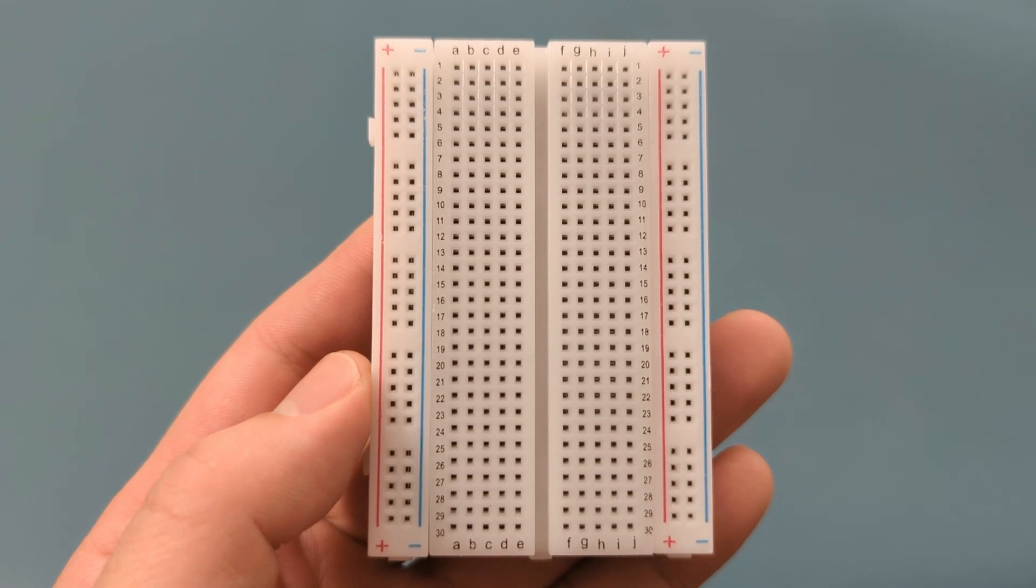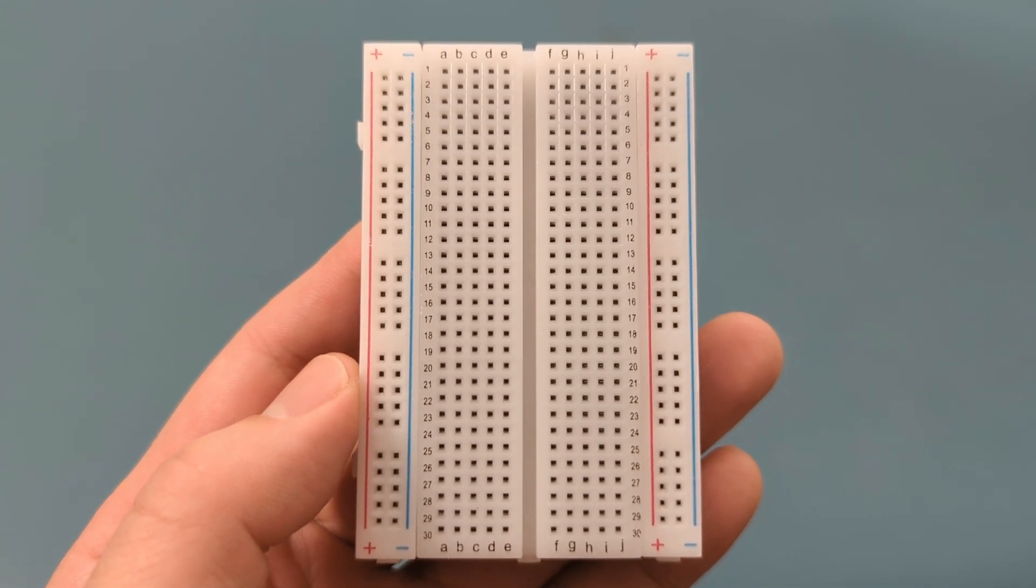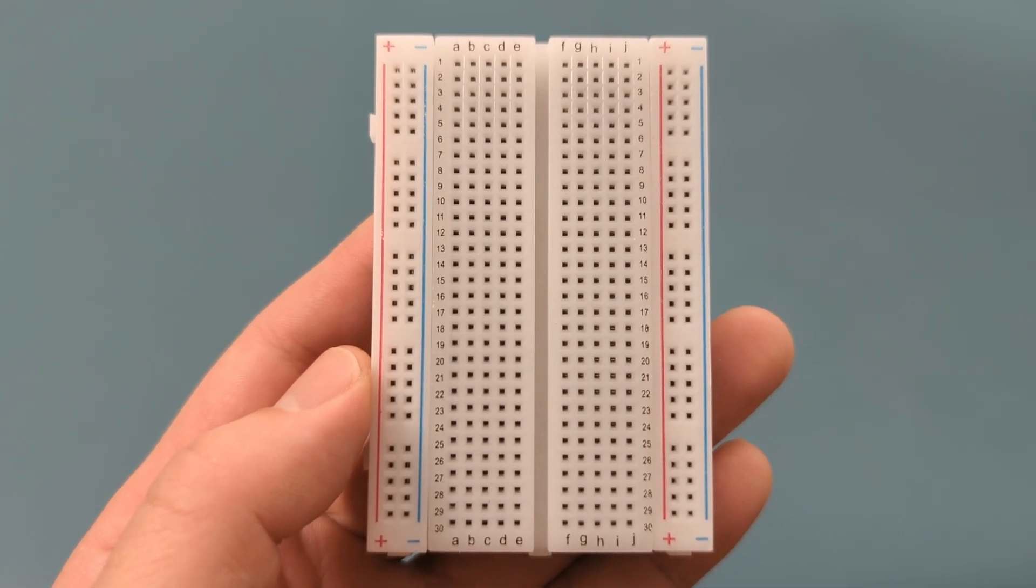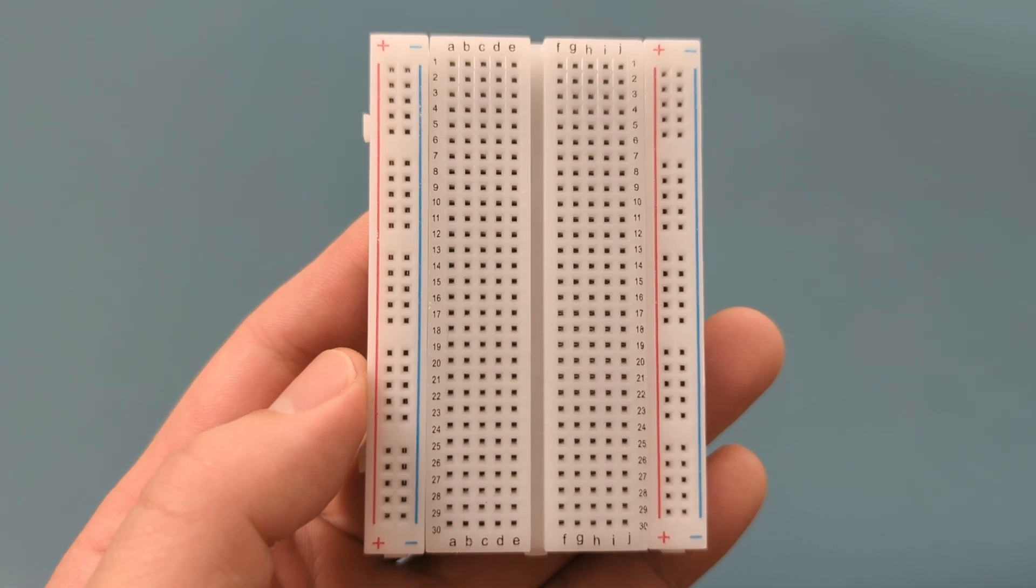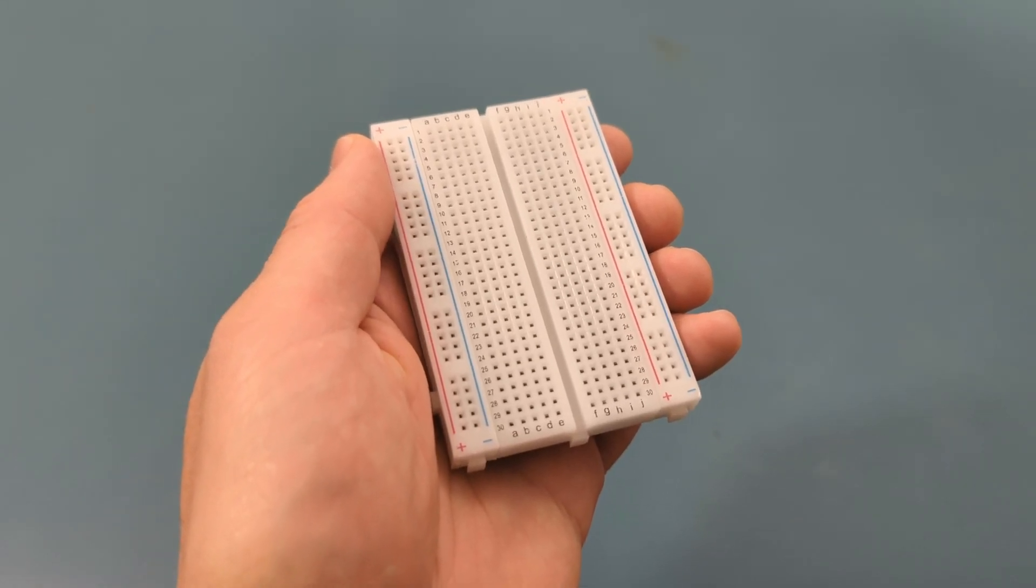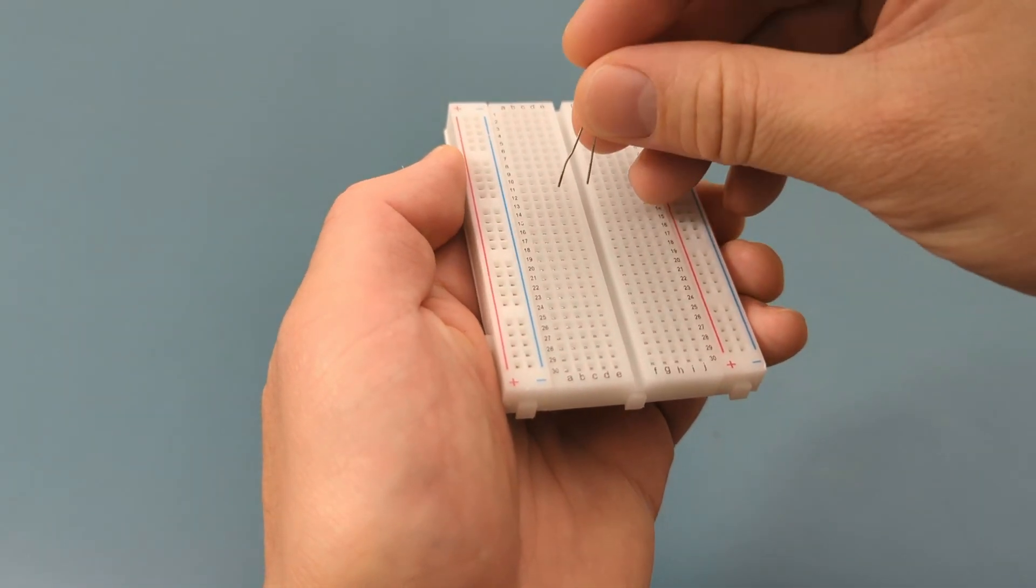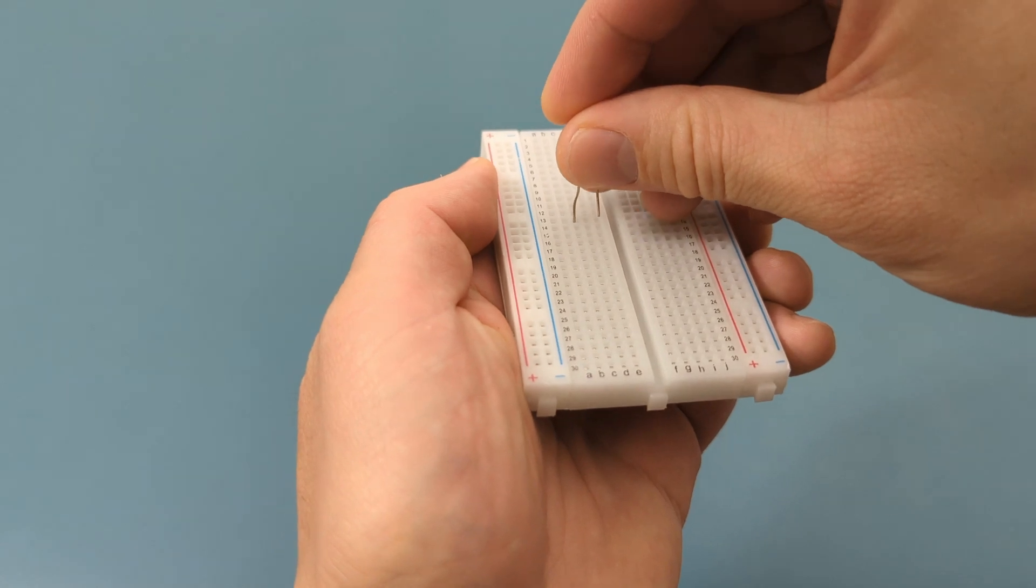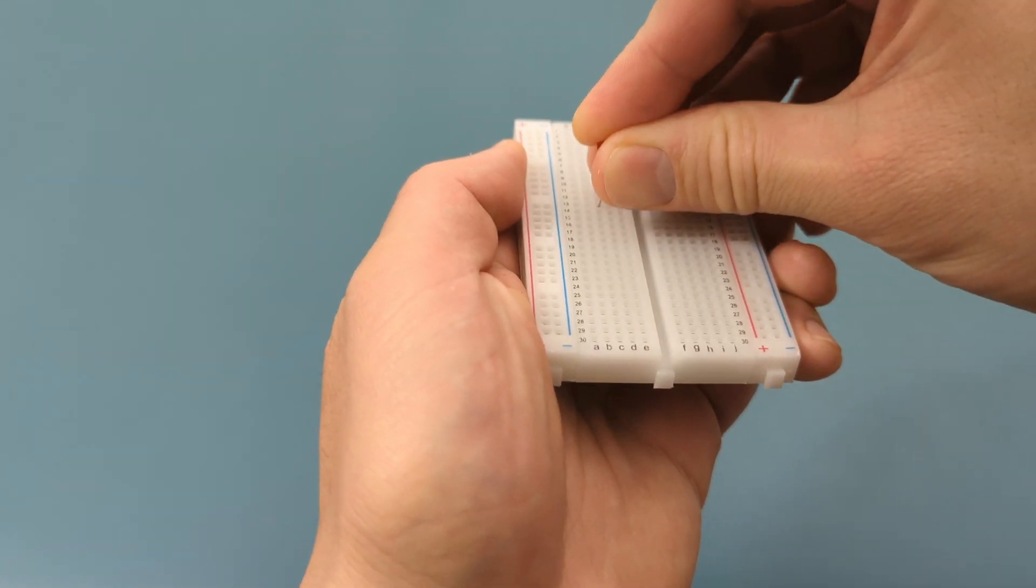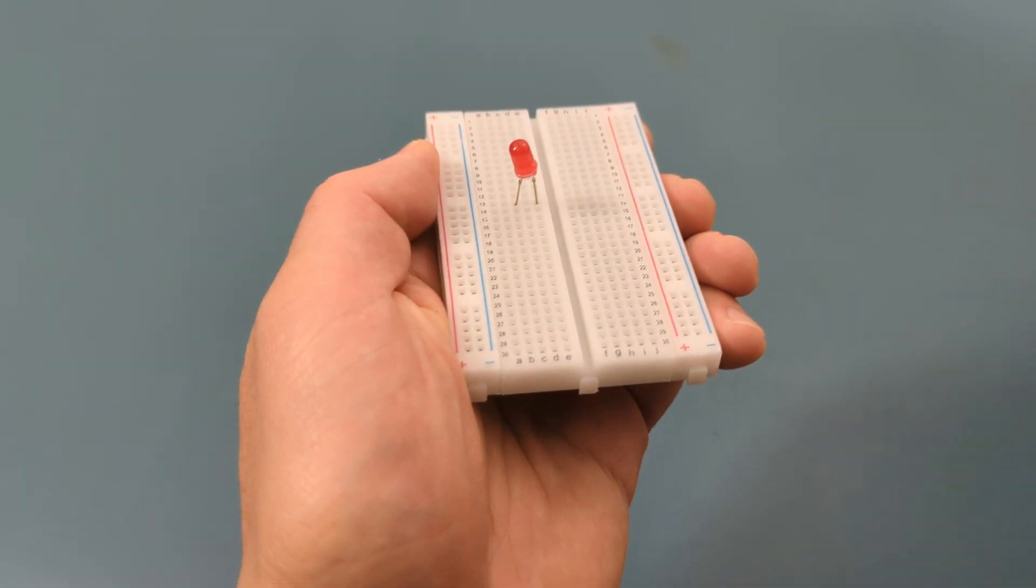What is a breadboard? This small rectangular piece of plastic has a grid of tiny holes, and it's the go-to tool for building circuits quickly and easily without soldering. You simply push electronic components like LEDs, resistors, or jumper wires into the holes, and the breadboard does the magic of connecting them electrically.